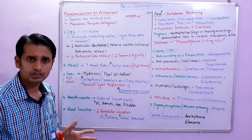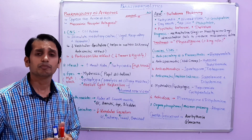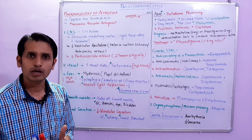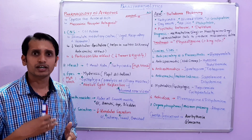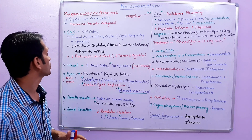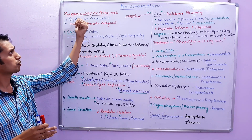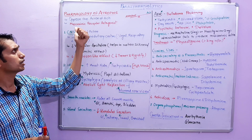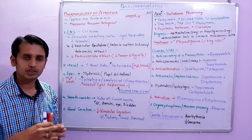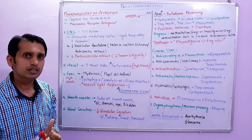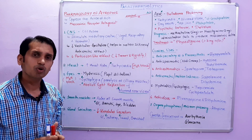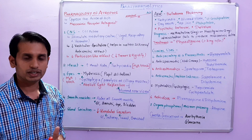First, we should know what anticholinergic or antimuscarinic drugs are. These are drugs which oppose the effect of acetylcholine by blocking the muscarinic receptors — M1, M2, and M3 — and they are called anticholinergic or antimuscarinic drugs. The main actions are: opposing acetylcholine and acting as muscarinic receptor antagonists.